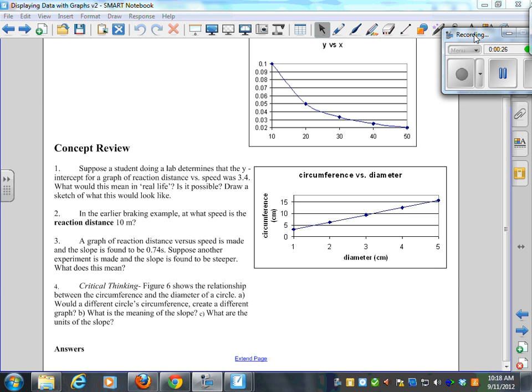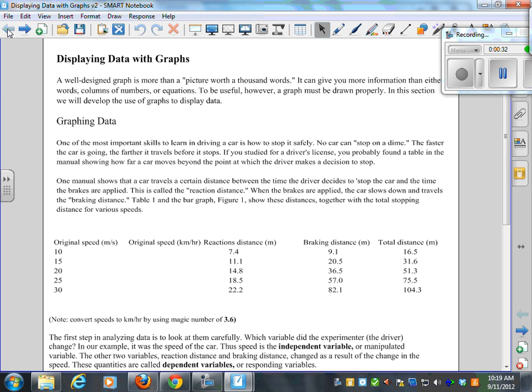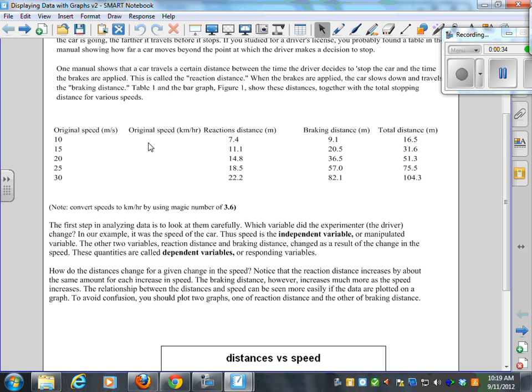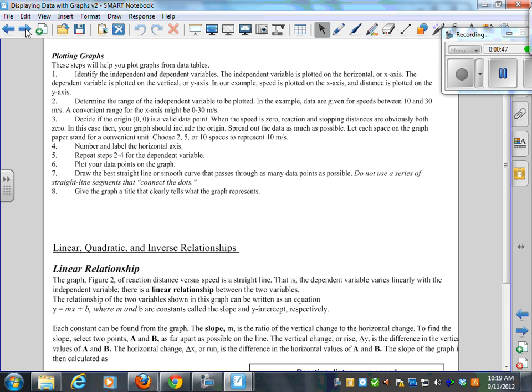Alright, so just a quick refresher here we talked about yesterday. I'll go right back to the start. We talked about the magic number 3.6. We talked about independent and dependent variables. Independent goes on the bottom, the X. The dependent goes on the Y.